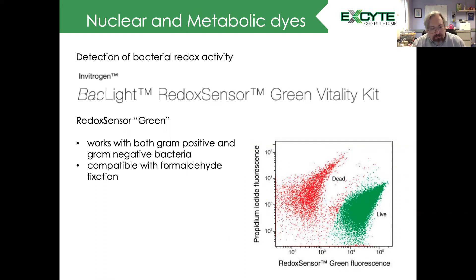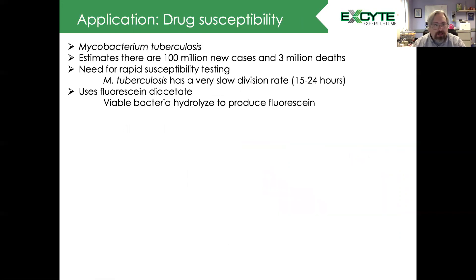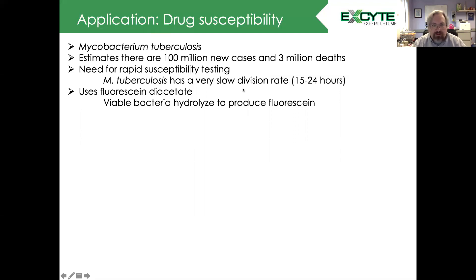How can we use these in practical applications? One such case is drug susceptibility. Mycobacterium tuberculosis, for example — there's an estimate of about 100 million new cases per year and roughly 3 million deaths. So there is a need for rapid susceptibility testing because M. tuberculosis has a very slow division rate.